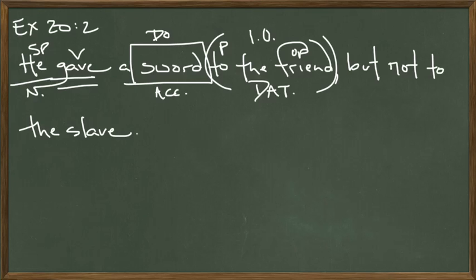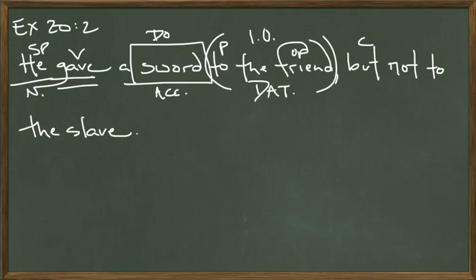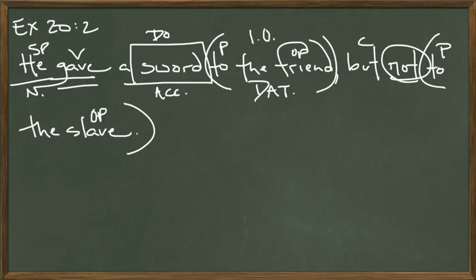Another clue: anytime you have 'giving' going on in Latin, something's going into the dative case. He gave a sword to the friend, but not to the slave — this is where it gets a little complicated. 'But' is a conjunction, and we don't have a subject after it. All we have is 'not to the slave,' so this is a complex sentence. If we had two complete sentences joined by a conjunction it would be compound, but since there's no subject in the last part, it's complex. 'He' is actually the subject of the second part too, and so is 'gave.' He gave not a sword to the slave — essentially. 'Not' is always an adverb. 'To' is a preposition; 'slave' is the object of the preposition. The slave is grammatically an indirect object and goes into the dative case.